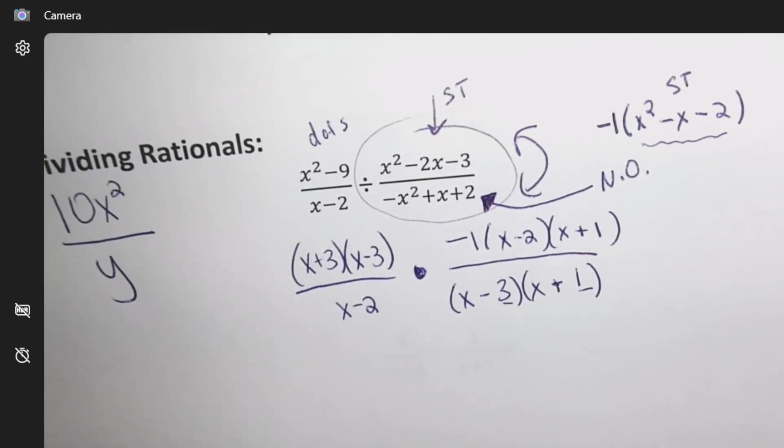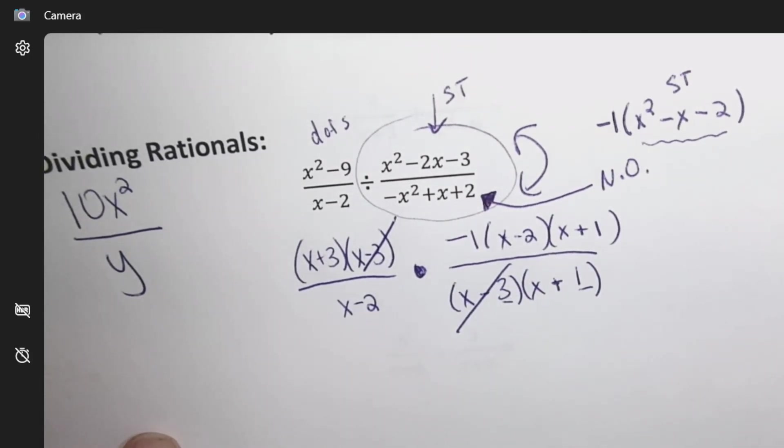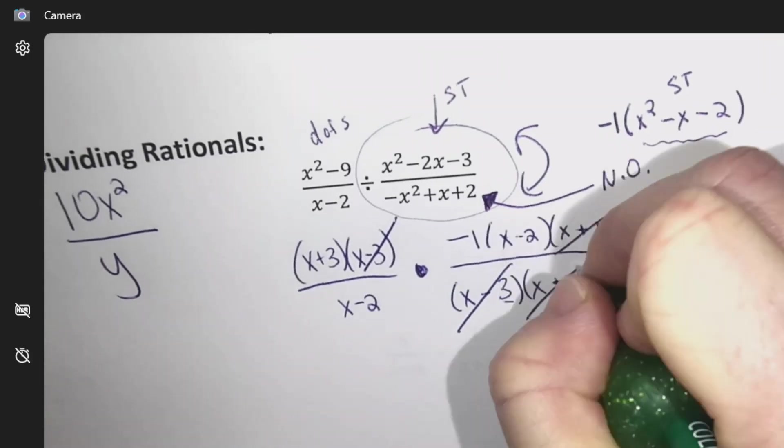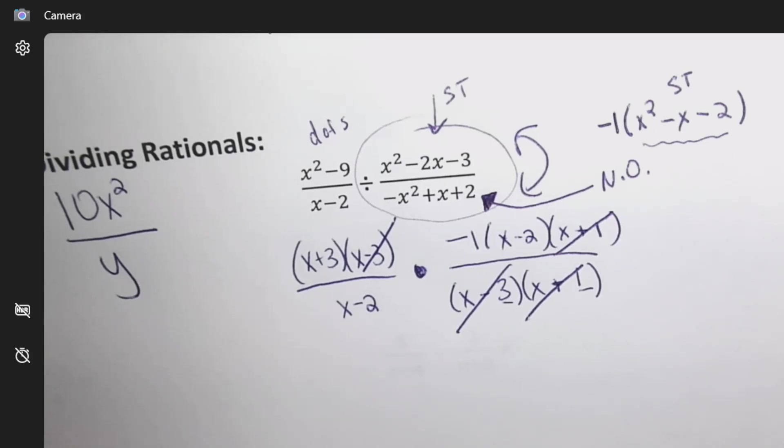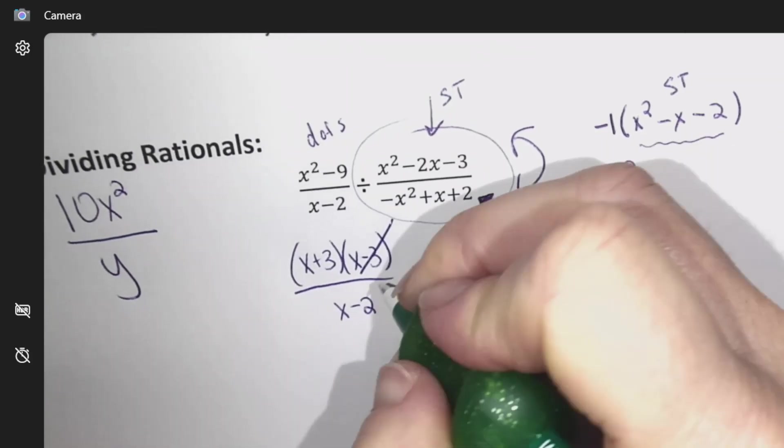Now we're looking for cancellations - anything from a top and a bottom, any top with any bottom pair. So x subtract 3, cancel. X plus 1. It doesn't matter where - it could be on that one or that one - it just has to be top bottom. And then x minus 2.